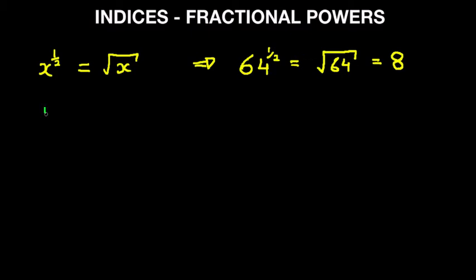Now suppose we have y to the power of a third. Well, this simply becomes the cube root. So write down y, the cube root. Which number multiplied by itself three times gives the answer.